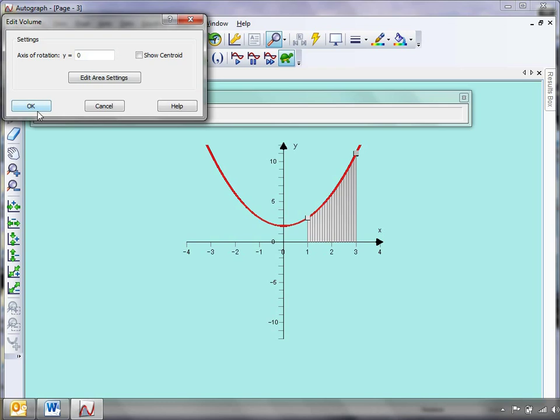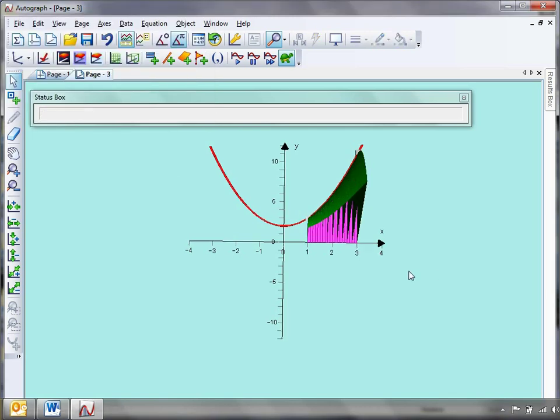And, of course, before you click anything, say to the students. What's it going to look like? What's the volume of that shape going to look like? As we spin it around. Once they're happy, click OK. And watch it appear.